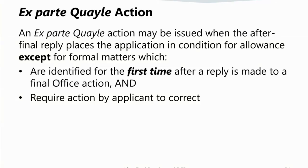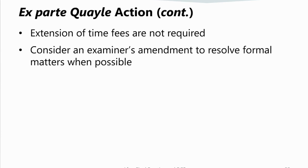An ex parte Quayle action may be issued when the after-final reply places the application in condition for allowance except for formal matters, which are identified for the first time after a reply is made to a final office action, and which require action by applicant to correct. An ex parte Quayle action closes prosecution in the application. When issued, extension of time fees are not required. When possible, you should consider conducting an interview and writing an examiner's amendment rather than an ex parte Quayle action to resolve formal matters and issue an allowance.